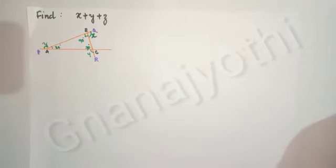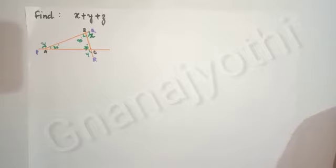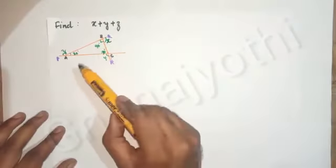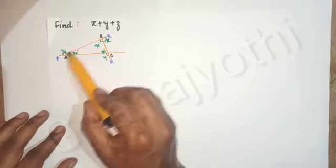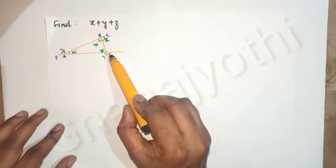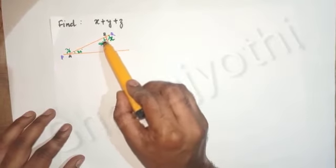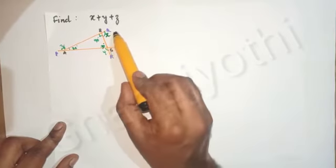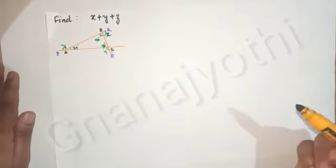Hello dear students, welcome to Gnana Jyoti YouTube channel. We are discussing the chapter 'Understanding Quadrilaterals.' The question says: find x plus y plus z. If you observe the figure, ABC is a right angle triangle which is right-angled at B, so angle B is 90 degrees. Here it is given z, x, and y.